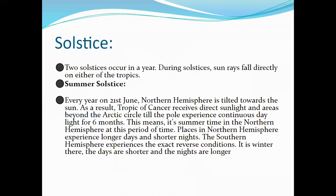There are two solstices in a year: the summer solstice and the winter solstice. First, let's talk about the summer solstice. Every year on the 21st of June, the northern hemisphere is tilted toward the Sun.